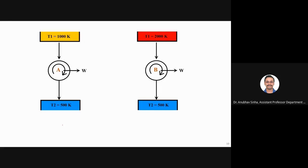Consider two heat engines with a sink at 500 K. Engine A has a source at T₁ = 1000 K and engine B has T₁ = 2000 K. These are real engines with losses — engine A reports 40% actual efficiency and engine B reports 50%. Which engine is better?